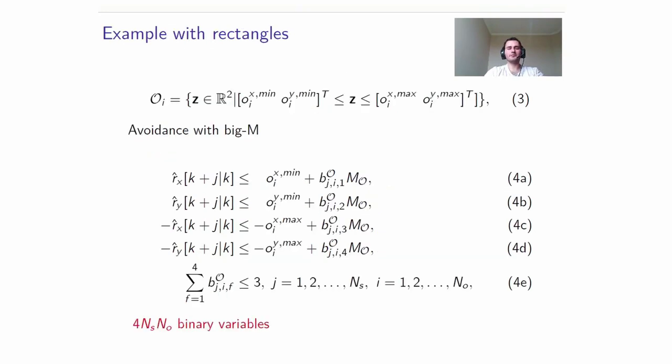For simplicity, we will present avoidance with rectangular obstacles and clusters. With rectangular obstacles, to perform avoidance, we have to be either to the left, to the right, above or below an obstacle. This is expressed by the following linear constraints.